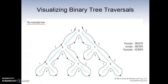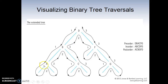Let's look at an example. For pre-order — root, left, right — we print the root first, which is D. Then go to the left, which is B. We have to finish the left subtree first, so we print A. Then we go to the right of B, which is C, finishing the left subtree. Then we print F and G. So pre-order gives us: D, B, A, C, F, G — root, left, right recursively.